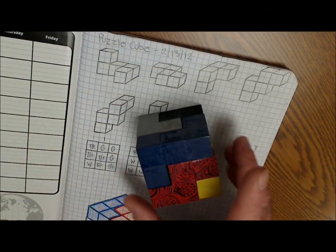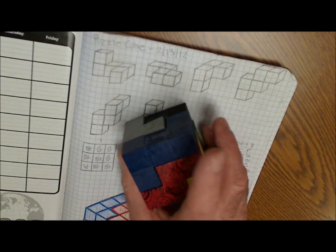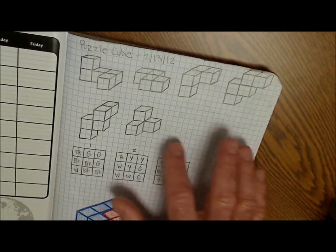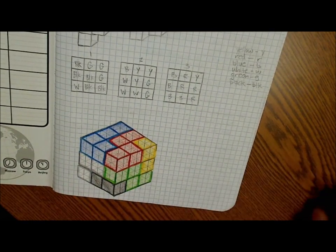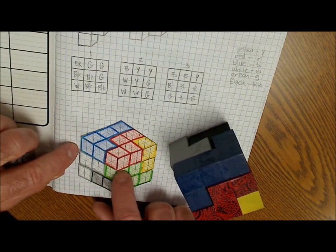Here's our finished product of the puzzle cube. Here's the puzzle itself. In our engineer's notebook, we have all of our pieces drawn. And then we drew the key on isometric paper and then taped it together.